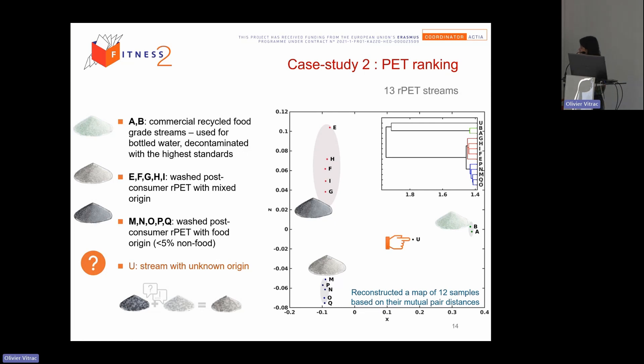So here we can see clearly we have three groups. This one is a food grade recycling and decontaminated. This one and this one, not decontaminated PET with different origins. And here you have the unknown, maybe closer to the food grade materials. At this stage, we cannot say that we don't have the minimum. It's really this relative distance.